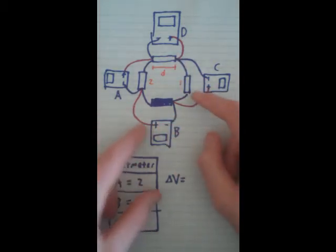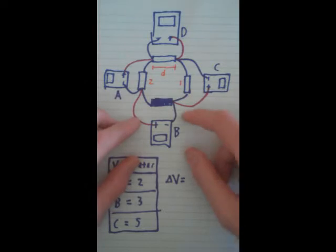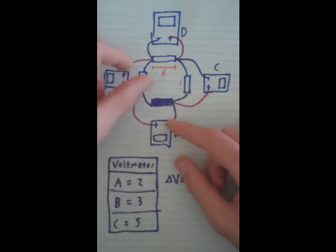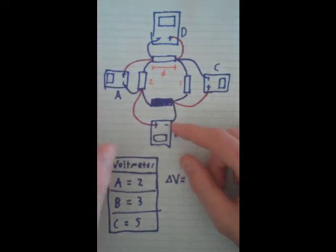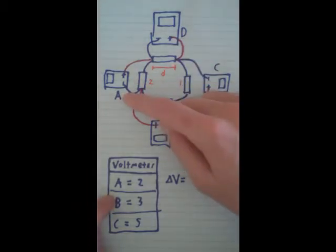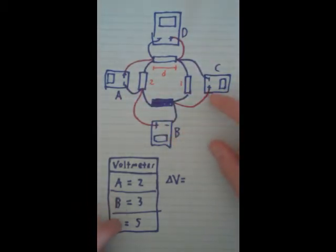Well, I'll spare you all the looking at this, and basically we're finding the voltage drop for each one of these, and we essentially have to figure out what voltmeter D reads, because we know that A equals 2, B equals 3, and C equals 5.